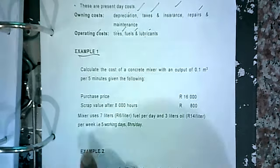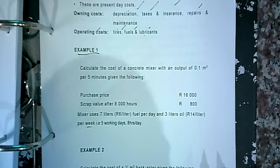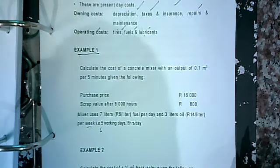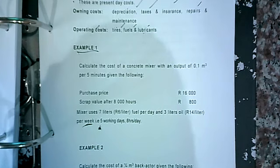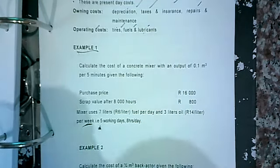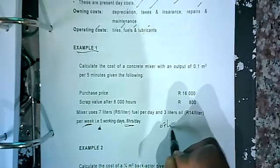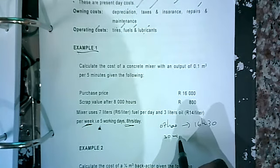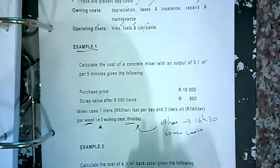Three liters of oil which cost 14 rand per liter per week. When I say per week, I'm saying five working days at eight hours per day. You need to read the fine print — I may try and confuse you by saying your week is a six working day week, so the hours increase. Also, I may not tell you eight hours a day; I'll tell you from 07h00 to 16h30 with a 30-minute lunch in between — you've got to work this out to get the number of working hours per day.